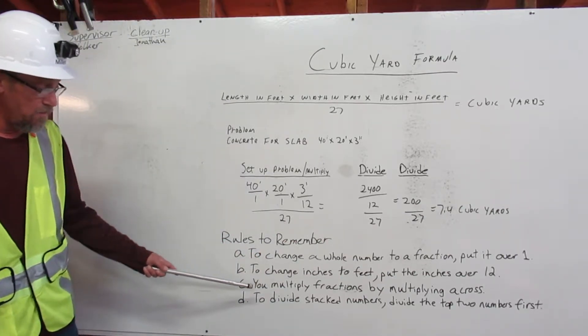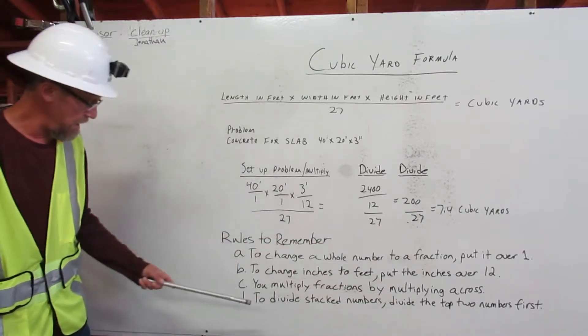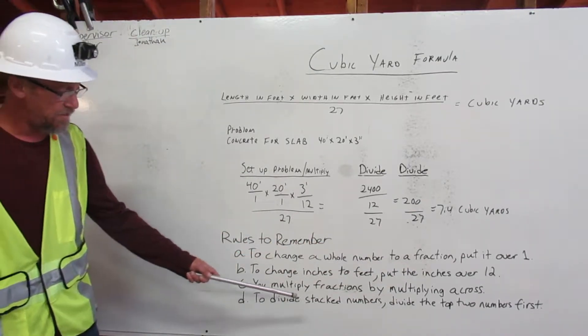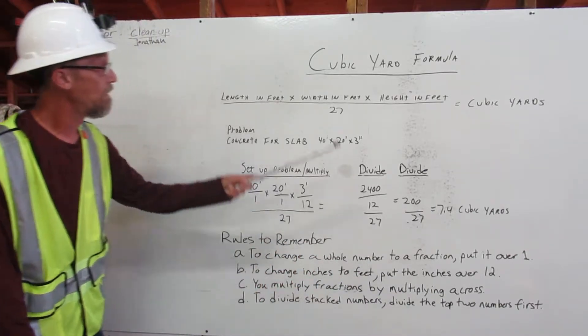C: You multiply fractions by multiplying across. And D: To divide stacked numbers, divide the top two numbers first.